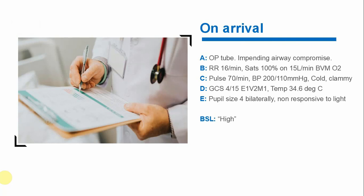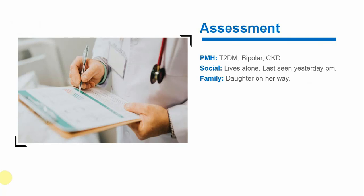There was no failure to oxygenate or ventilate at that moment; however, there was impending airway compromise, so we were preparing for intubation while also optimizing her beforehand. We got some background history: she had type 2 diabetes, was bipolar and taking lithium — compliance was uncertain. She also had a background of chronic kidney disease, and her daughter had seen her just the day before and found her pretty normal.